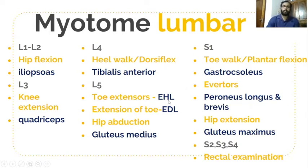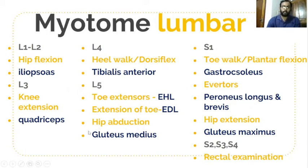For L5, three things are tested: toe extensors — the first toe (EHL, extensor hallucis longus) and extension of the other toes (EDL, extensor digitorum longus); and hip abduction against resistance in lateral position to check the gluteus medius.